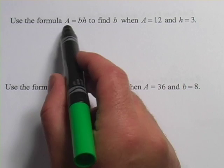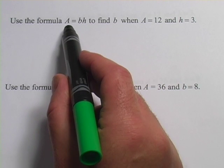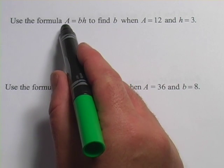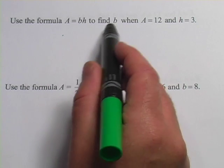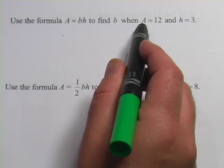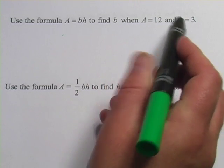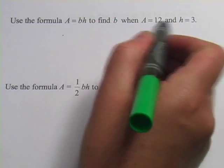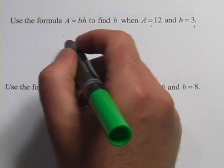This one says use the formula A equals b times h. That sounds like the formula for the area of a parallelogram, area equals base times height, to find b when A equals 12 and h equals 3. So we just plug these numbers in for A and h and try to solve for b.